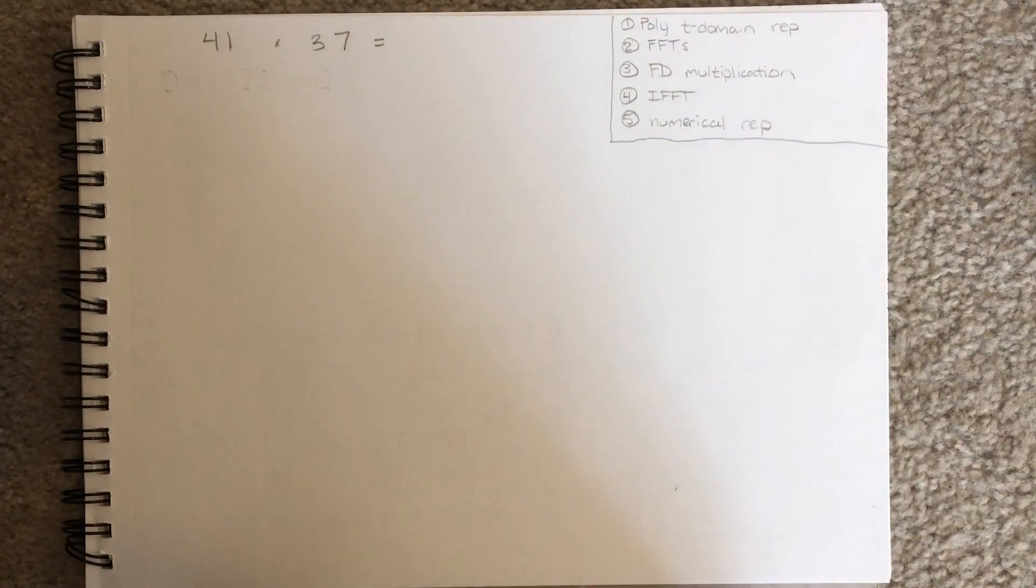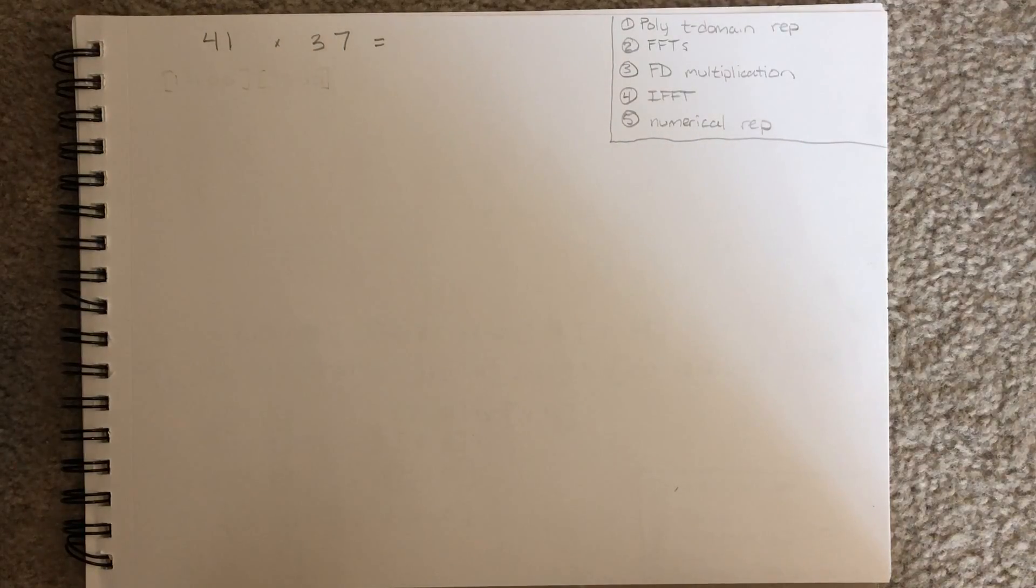Today we are going to multiply 41 times 37 using the frequency domain with fast Fourier transforms. For very large numbers, this method is ideal. For small numbers, it is not. However, it shows the steps and the procedure more clearly.